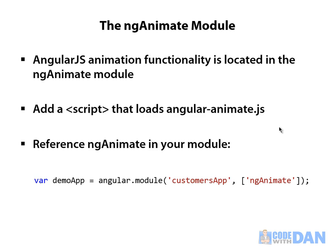All we have to do is, much like ngRoute, add it as a dependency. So now as we define our Angular module — the customers app in this example — we'll reference ngAnimate, and the animation functionality will be available. We can then tie it in with some extra work and some CSS into the directives discussed earlier.